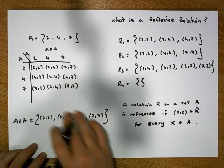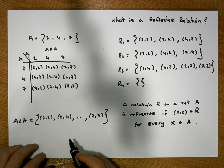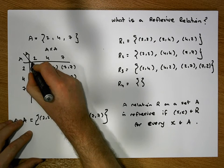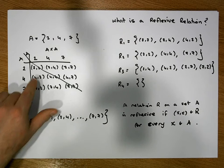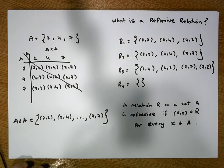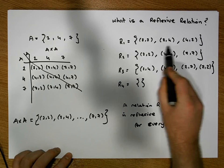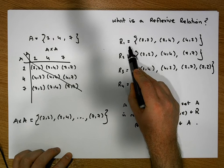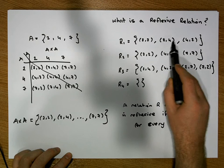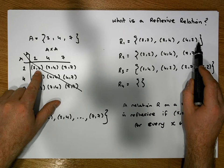Another way to look at this using the cross product table: all the entries down the main diagonal have to be contained in our relation. Considering r1, which contains {(2,2), (2,4), (4,2)} — it contains (2,2), which is good.